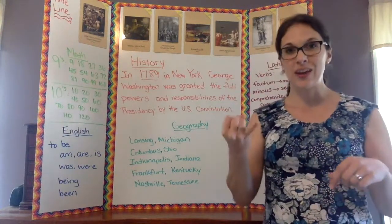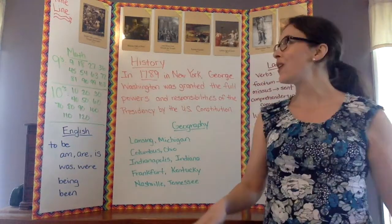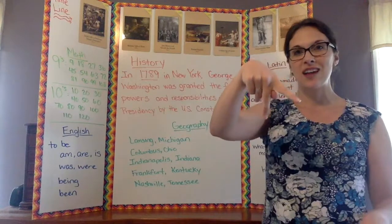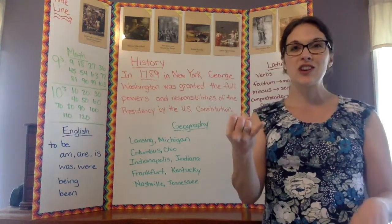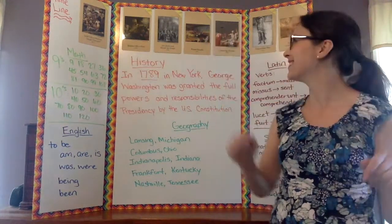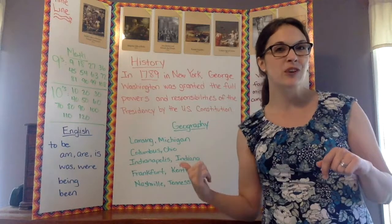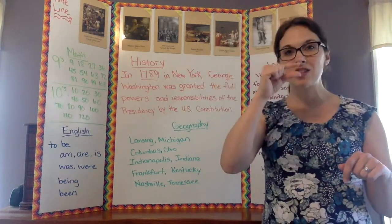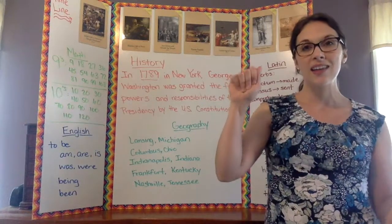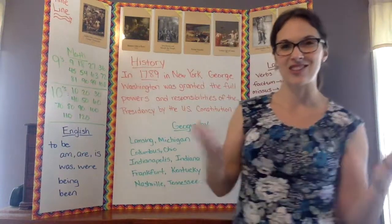So all together it goes like this: Judah falls to Babylon. Temple destroyed. Babylon falls to Persia. Jews return and rebuild the temple. Roman Republic. Golden age of Greece. Peloponnesian War. Persia falls to Alexander the Great. And there's your timeline.